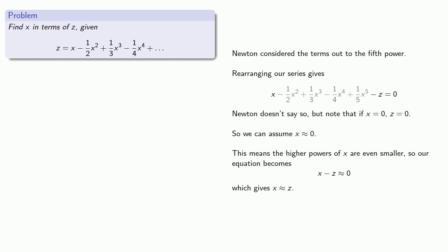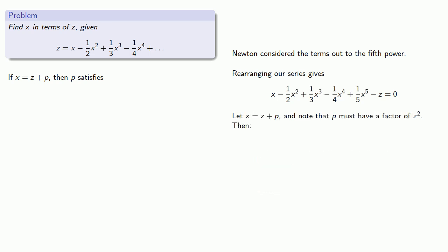So, as before, if X is approximately Z, then X is equal to Z plus something, where something satisfies, well, we'll figure that out using our fundamental equation. So, we'll let X equals Z plus P, and we'll note that P has to have a factor of Z squared. Remember, we're trying to express X in terms of powers of Z. We already know what the Z term is, so P itself has to be a Z squared or higher term. Since we're only concerned with powers of Z up to the fifth, we have the following.